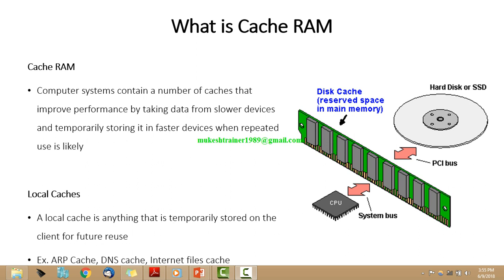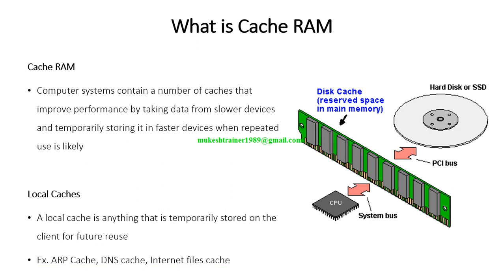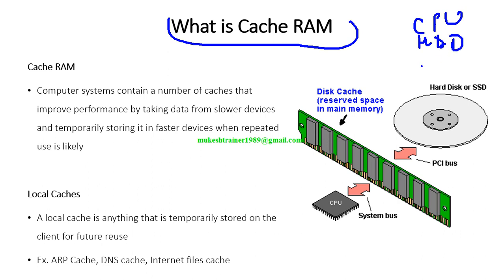The next topic is cache RAM, and that's an important question whenever we consider buying hardware for an organization. The first things we look for are the CPU, hard disk drive, RAM, and motherboard — but apart from those, there is another thing we look for: cache RAM. What is it, and how does it affect the speed of a computer?